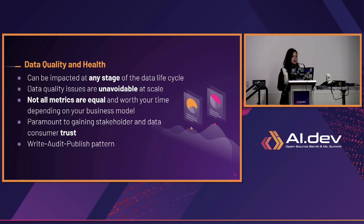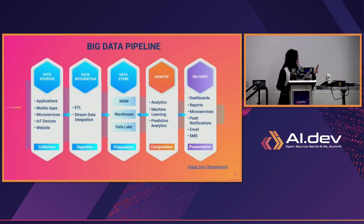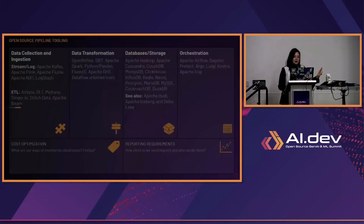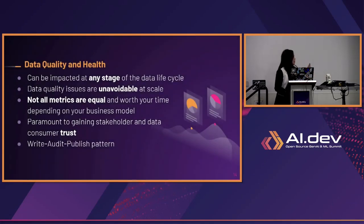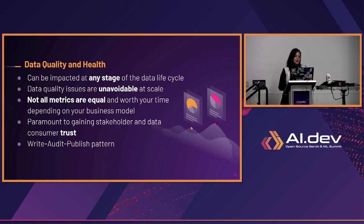Bringing it back to data quality: at every single one of these pipeline stages, your data can get wonky. Anytime somebody touches something, anytime there's a process or a step or some code in place, you're kind of putting your data at risk. Data quality issues can be unavoidable, especially at scale when you're dealing with so many complex pipelines. Not all of the metrics that we measure data quality by are going to be equal, and more importantly, it's not going to be worth your time to pursue all of them.